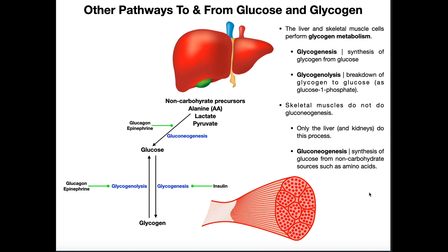A few things we should probably understand before we go any further is what the meaning of genesis and lysis are. When we see the suffix genesis — like in glycogenesis — that implies that we're building something or making it. So if our prefix is glyco, that means we are generating glycogen. We're making glycogen.